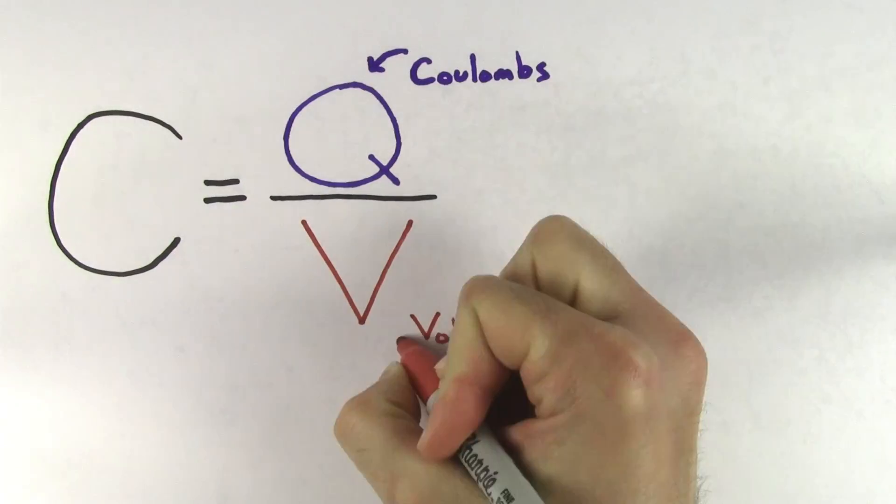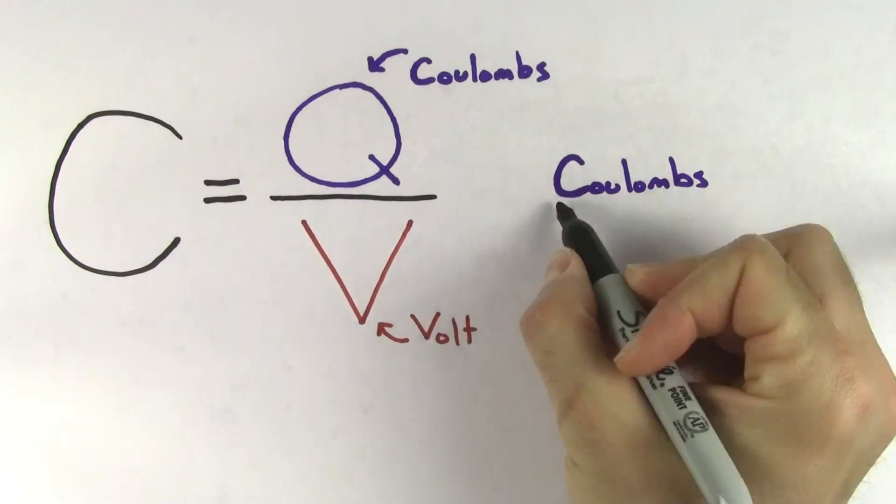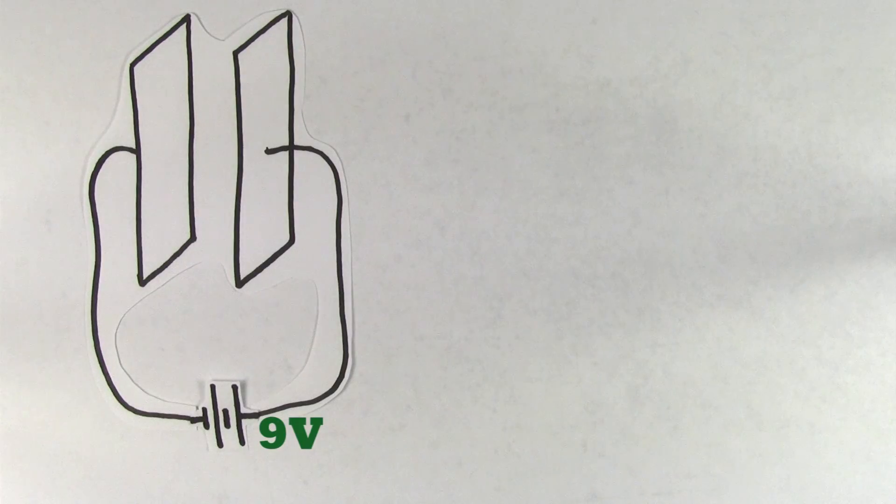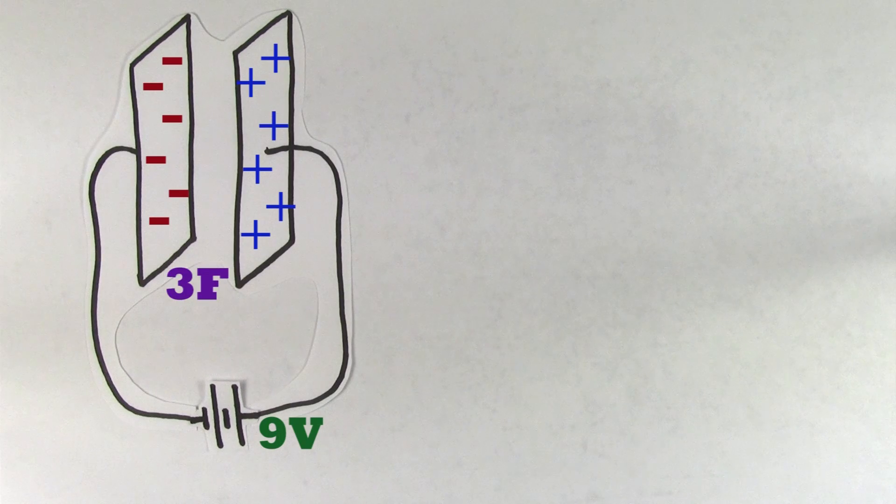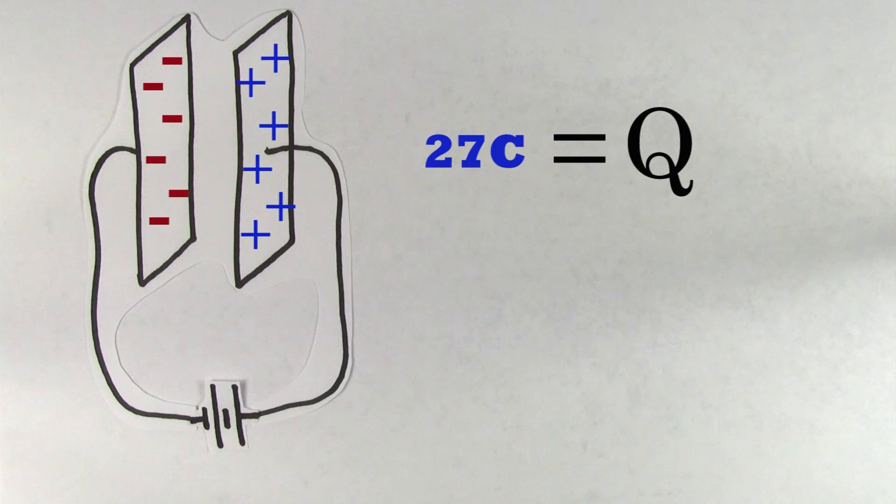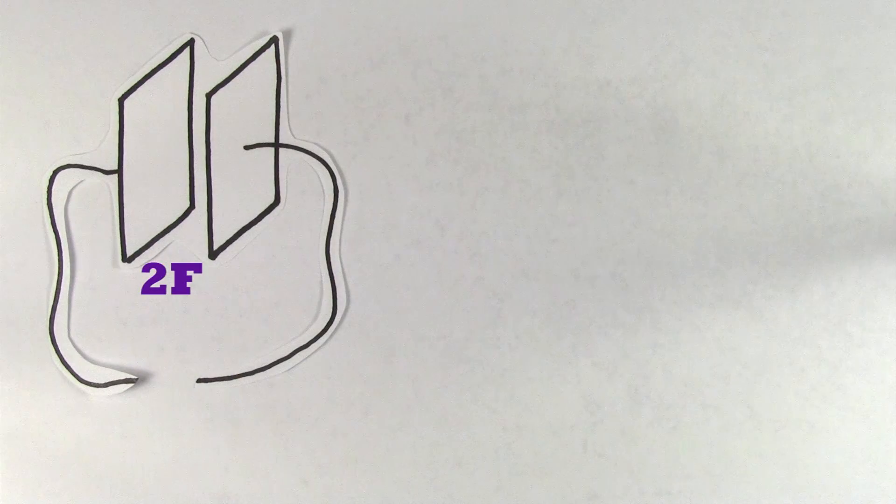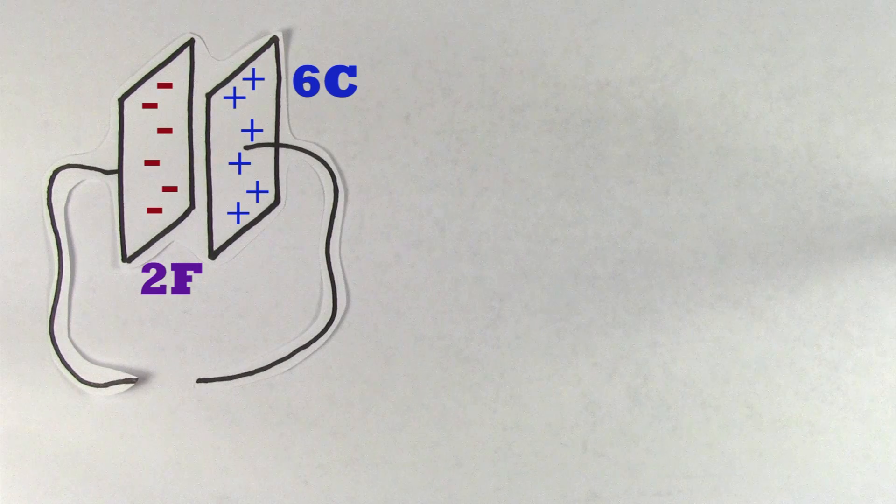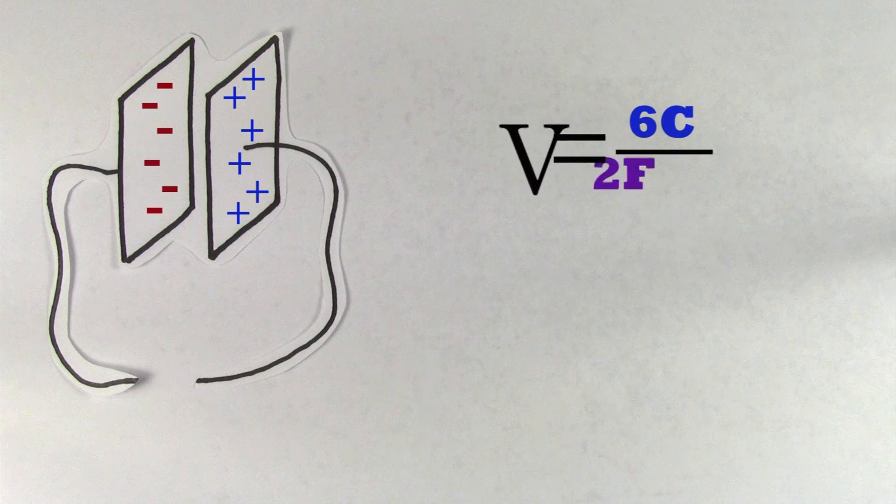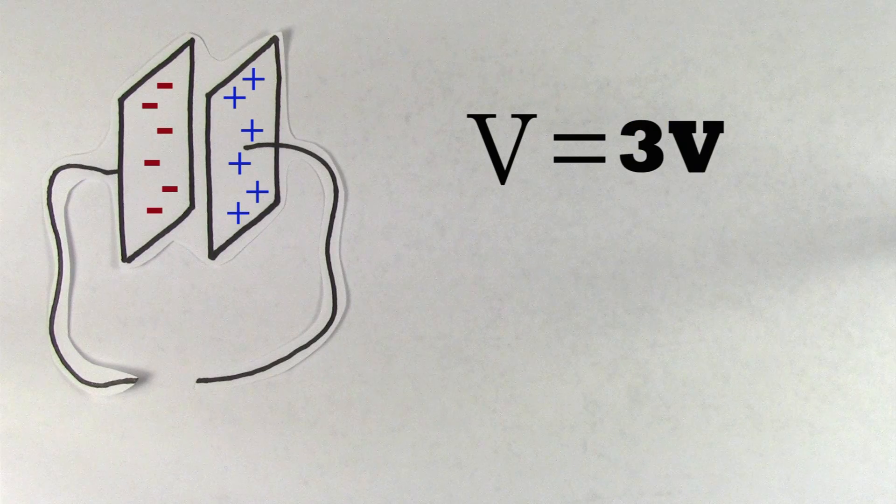Looking at the formula for capacitance, we can see that the units are going to be coulombs per volt. A coulomb per volt is called a farad in honor of the English physicist Michael Faraday. So if you allow a 9-volt battery to fully charge up a 3-farad capacitor, the charge stored is going to be 27 coulombs. For another example, say that a 2-farad capacitor stores a charge of 6 coulombs. We could use this formula to solve for the voltage across this capacitor, which in this case is 3 volts.